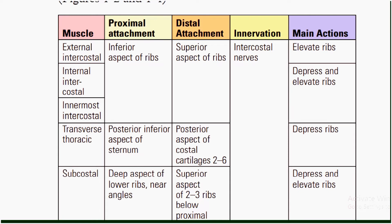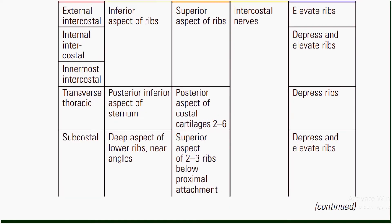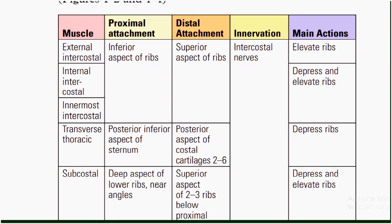The main action of the external intercostal muscle is to elevate the ribs. The internal intercostal depresses and elevates ribs, and the innermost intercostal muscles also depress and elevate the ribs. The transverse thoracic muscle has a proximal attachment on the posterior inferior aspect of the sternum and a distal attachment on the posterior aspect of costal cartilages two through six; it depresses the ribs.